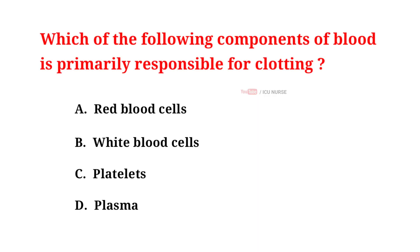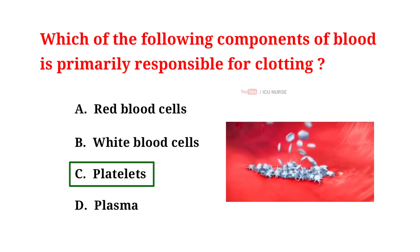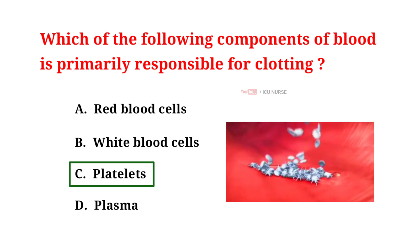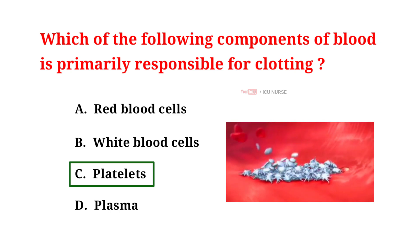Which of the following components of blood is primarily responsible for clotting? A. Red blood cells. B. White blood cells. C. Platelets. D. Plasma. And the correct answer is C. Platelets. Platelets are primarily responsible for blood clotting. They aggregate at the site of blood vessel injury and work with clotting factors to form a stable blood clot.